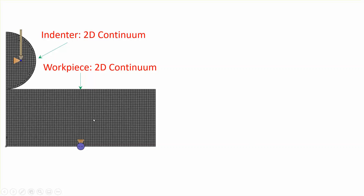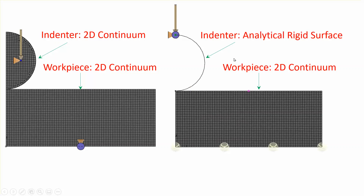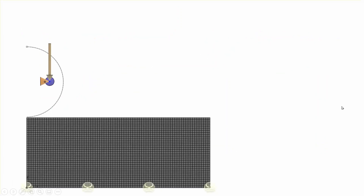In the case where both indenter and workpiece were modeled as continuum elements, they virtually rotate into axisymmetric continuum solids about the axis of symmetry. In the case where the indenter was modeled as a rigid surface, the workpiece is 2D continuum. In both those cases, there is no gap between the indenter and the workpiece, because contact is assumed to be right at the outer edge.